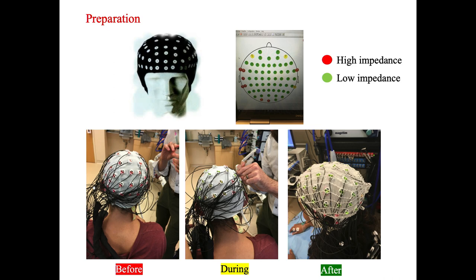This slide shows a new cap named the active cap. On the left side is the cap before preparation. We can see the technician using gel to prepare the cap. On the right side, almost all lights turn to green, which means the cap is ready for recording. In the middle, we are doing the preparation.